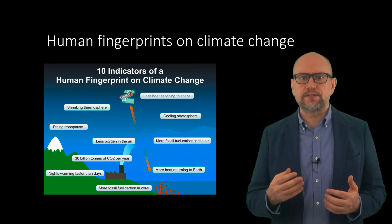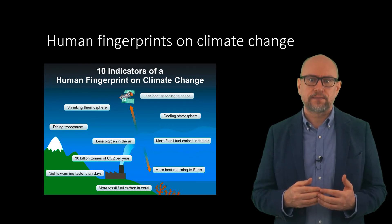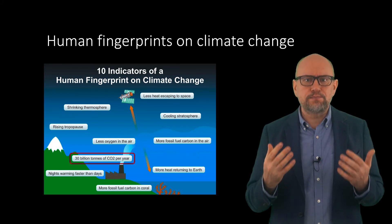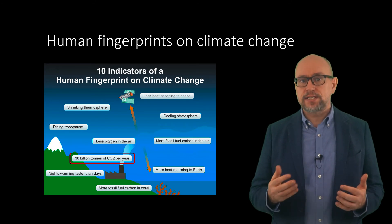There are four pieces of evidence that humans are raising CO2 levels. First, we know that humans are currently emitting some 30 billion tonnes of CO2 into the atmosphere each year. Second, oxygen levels are falling as if carbon is being burnt to form carbon dioxide.